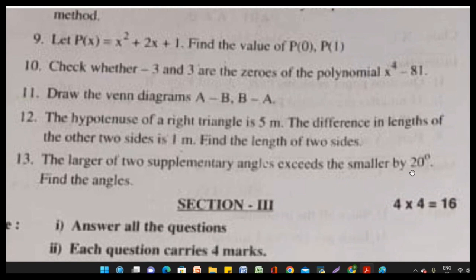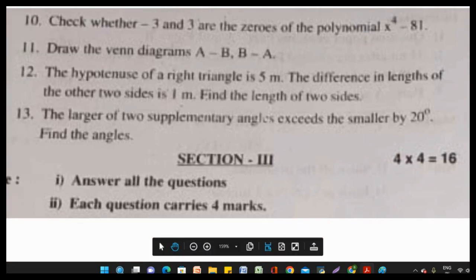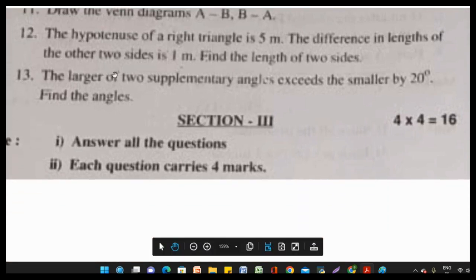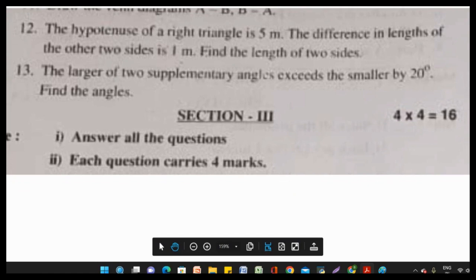The last question in Section 2: The larger of two supplementary angles exceeds the smaller by 20 degrees. Find the angles. This question is from pair of linear equations in two variables, with a slight change in numbers from the textbook.